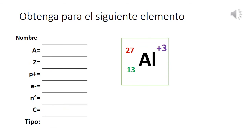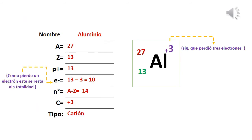Para el átomo de aluminio con carga +3: número másico A = 27, número atómico Z = 13, y por tanto 13 protones. En estado neutro hubiera tenido 13 electrones, pero como tiene carga +3, pierde 3 electrones, quedando con 10 electrones. Neutrones: A − Z = 27 − 13 = 14. Carga: +3, tipo: catión, porque perdió electrones.